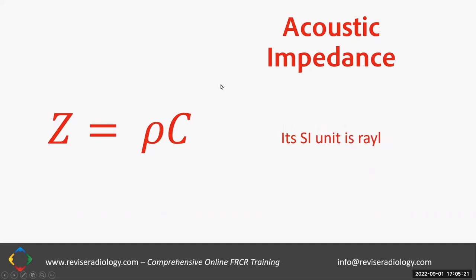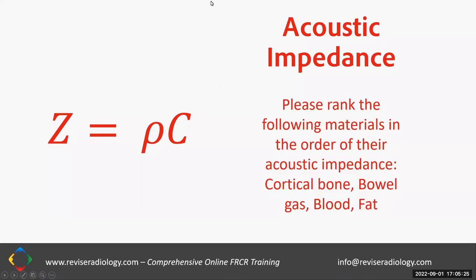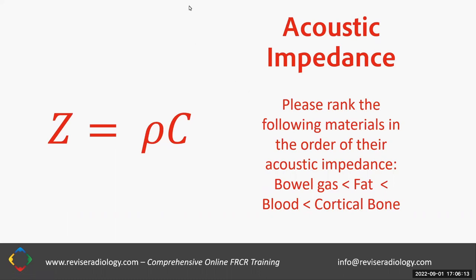I'd like to ask those in the room to rank the following materials in order of acoustic impedance in the chat box, from lowest to highest: cortical bone, bowel gas, fat, blood. One answer in the chat box: gas, fat, blood, bone — and that's correct, as it depends on the density of the materials, as we'll see in the following chart.